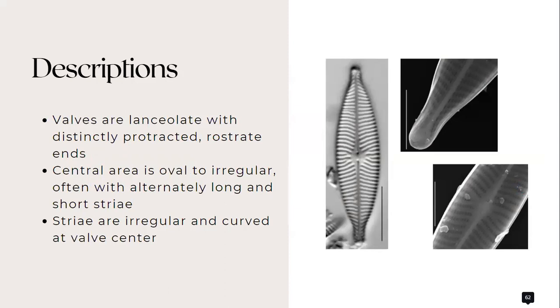its valves are lanceolate with distinctly protracted rostrate ends. The central area is oval to irregular, often with alternately long and short striae. The striae are irregular and curved at the valve center.